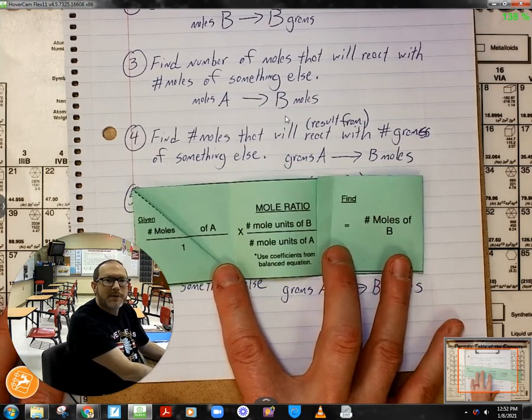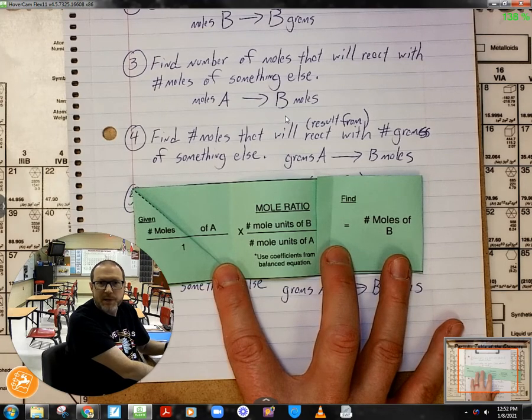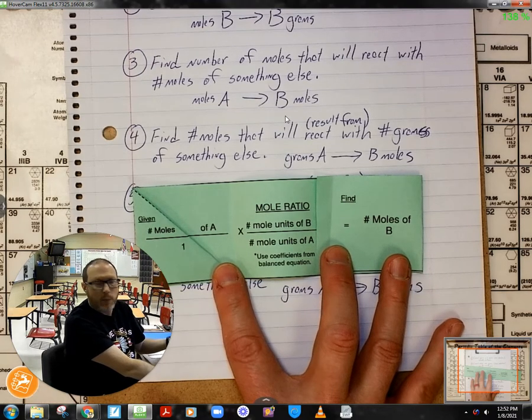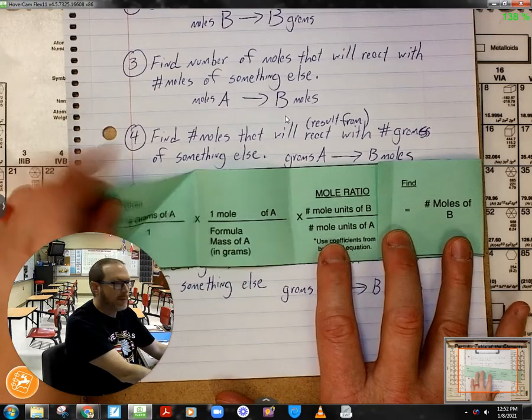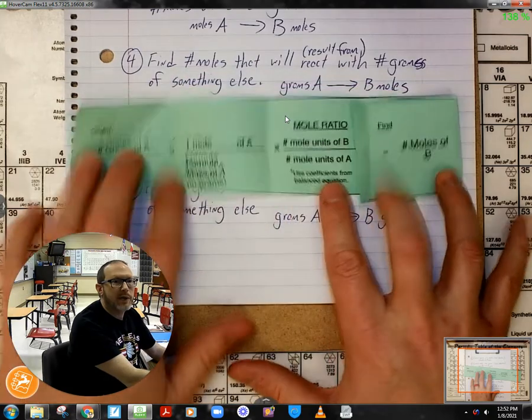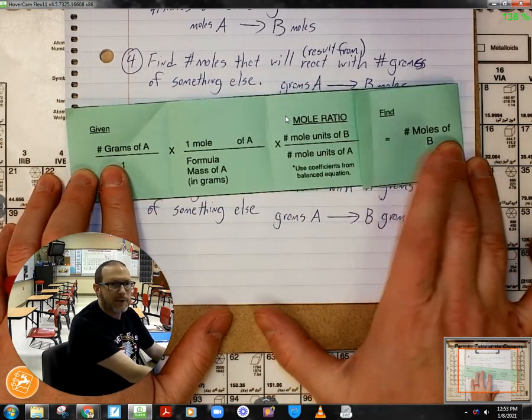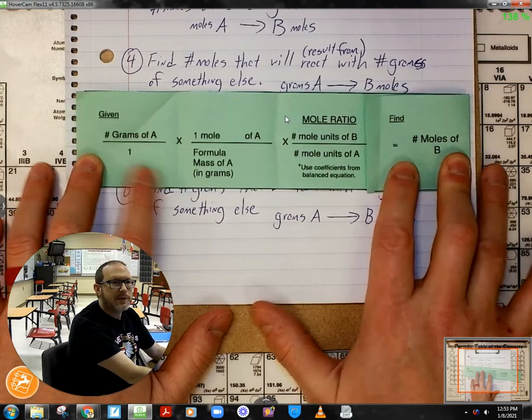If I am going from grams of substance A and I'm trying to find the moles of substance B it will either react with or yield, then I just unfold this side to where I'm starting off with grams of A, finding moles of B.